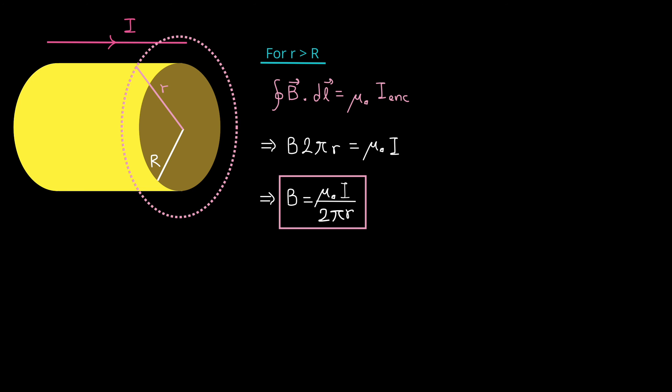The line integral is again equal to B times the circumference of the circular path, which is 2 pi r, for the same reasons as before. And this time i enclosed is equal to the total current in the wire, capital I. So we just rearrange to isolate B, and we get mu zero times I, divided by 2 pi r.